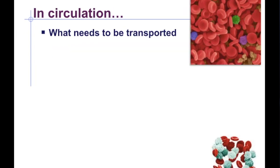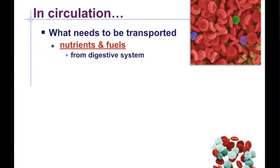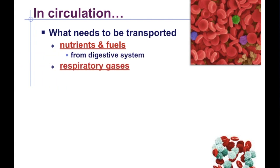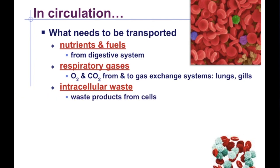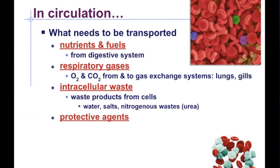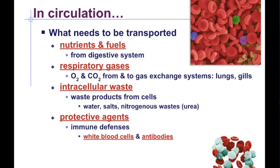In the circulatory system there's a variety of things that have to be transported: nutrients and fuels from the digestive system; respiratory gases — oxygen and carbon dioxide — from the lungs and gills; and you also need to be able to remove the waste products produced as a byproduct of metabolism. These are going to be water, salts, nitrogenous wastes, and carbon dioxide. You're also moving protective agents — that's the immune defenses — your white blood cells and antibodies.